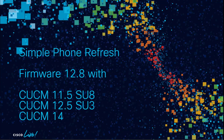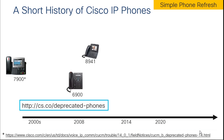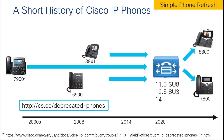Now we're going to talk about a very important feature that has come out just in the last couple of weeks. It uses firmware 12.8 as well as CUCM 11.5 SU8. This feature is called Simple Phone Refresh, and it will also come in CUCM 12.5 SU3 later this summer, as well as CUCM 14 when that comes out. This feature essentially allows you to prepare your environment to get rid of your deprecated phones and migrate them to the 78 and 88 series.